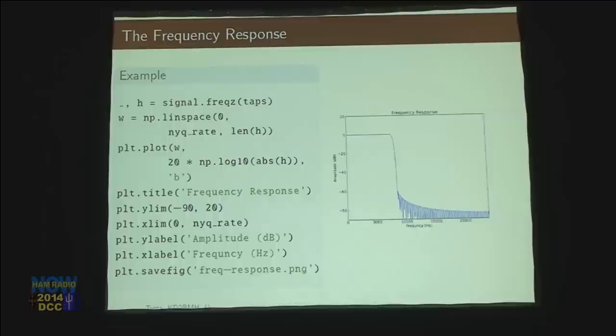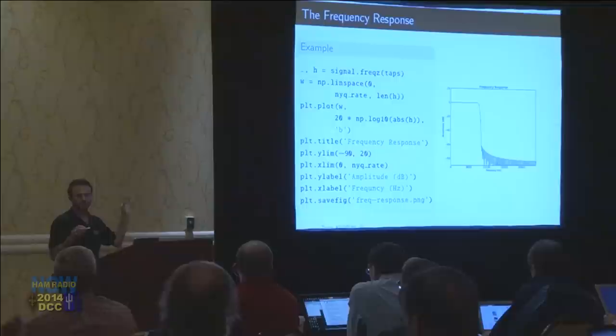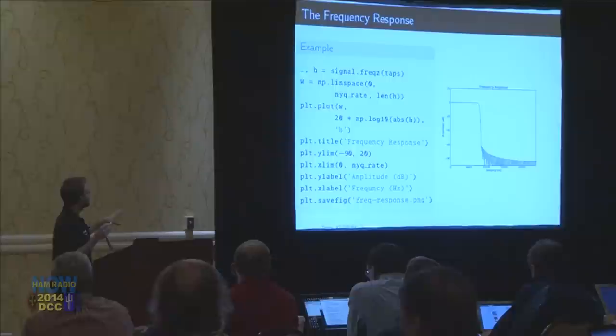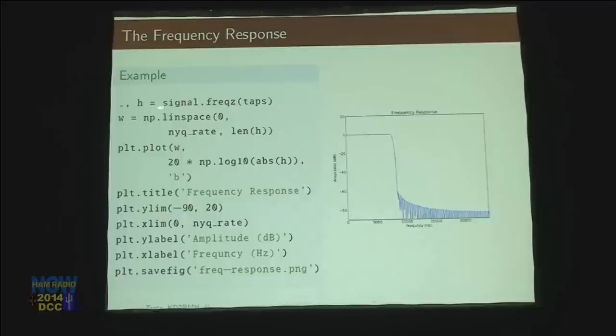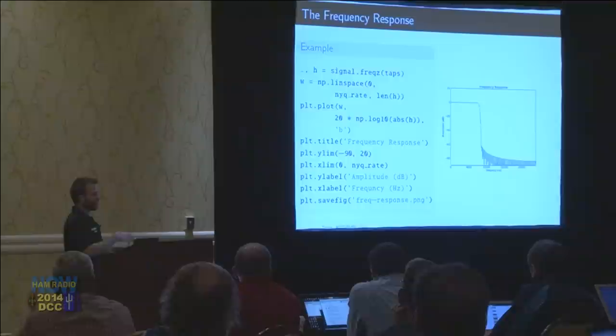We can draw the frequency response of the filter using this little block of code. The underscore is a throwaway variable — you don't care about the value, so you just put it in the underscore. What this does is create a graph showing that up to 8 kHz everything passes through, and after 9 kHz we're 60 dB down. That's confirmation that the filter we're designing matches our requirements.